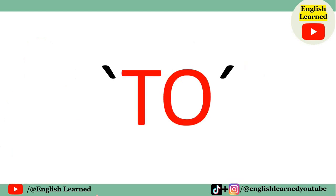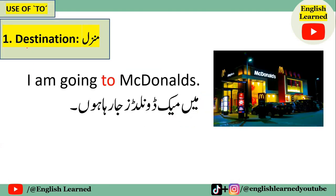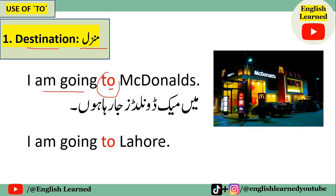Sab se pahle hum dekhenge 'to' ka sahih istamal. 'To' use karne ke liye first case hai destination — yani ke manzil ka bataane ke liye. Iski example dekhte hain: 'I am going to McDonald's' — mein McDonald's ja raha houn, ismein hum manzil bata rahe hain ke hum kahan ja rahe hain. Ab iski second example: 'I am going to Lahore' — mein Lahore ja raha houn.